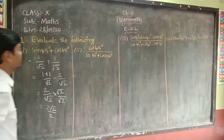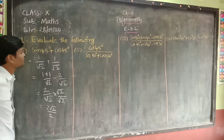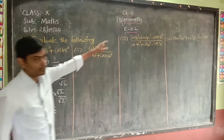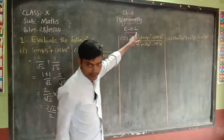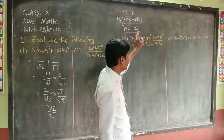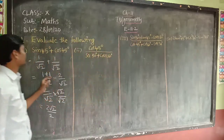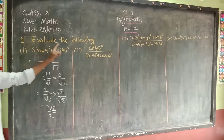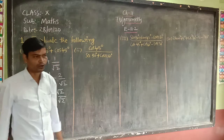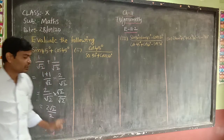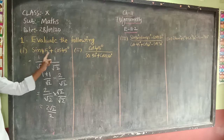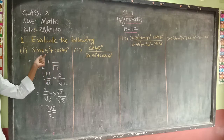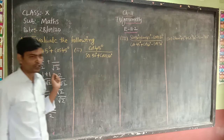Good morning everyone. In the last class we discussed exercise 11.1. Now let us go for exercise 11.2. The first question is: evaluate sine 45 degrees plus cos 45 degrees.